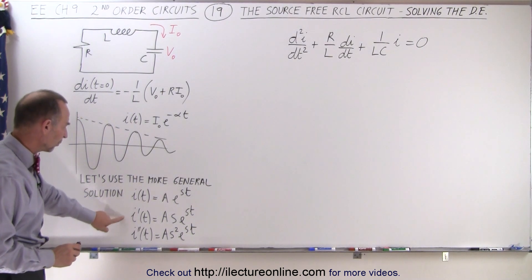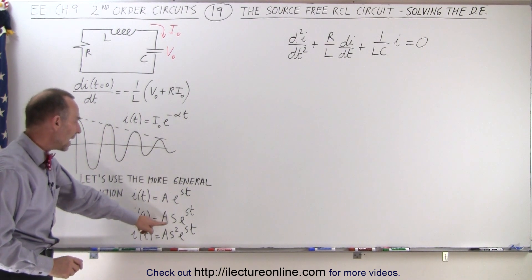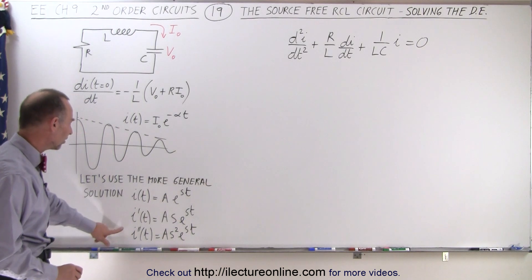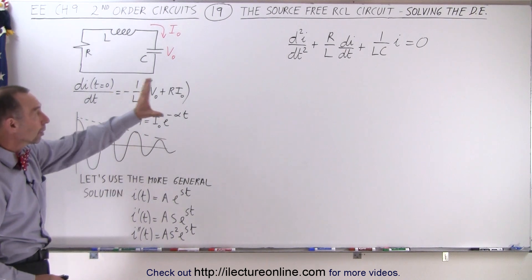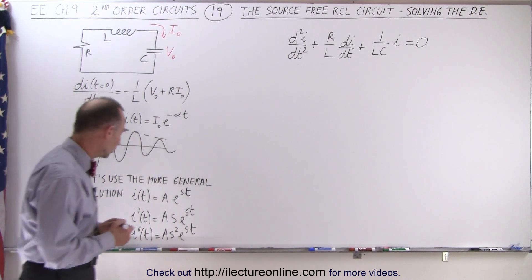If we take the derivative of the current with respect to time, we get as times e to the st, and the second derivative will be as squared e to the st. Now let's take those and plug those into our equation right there.